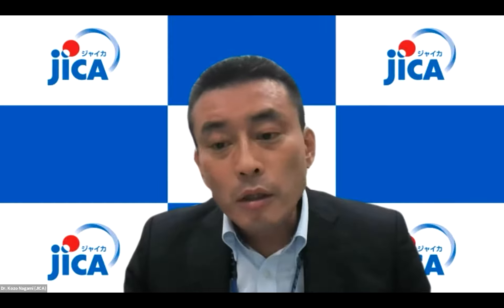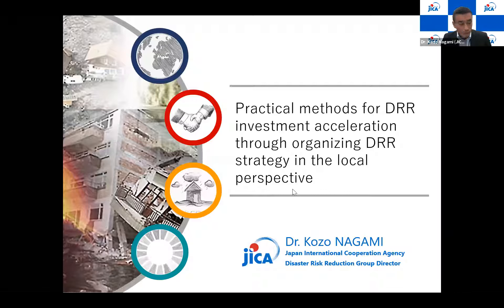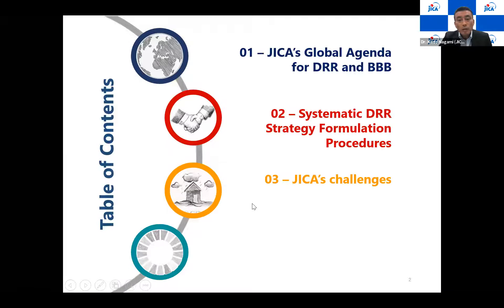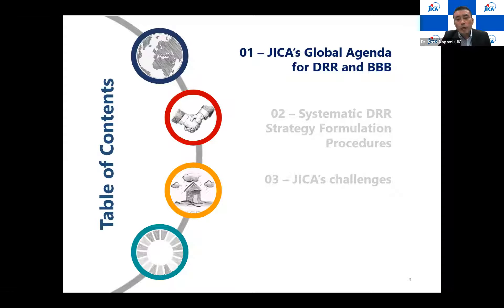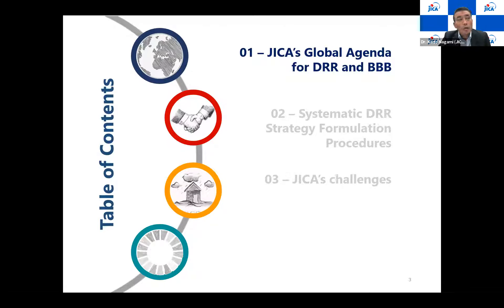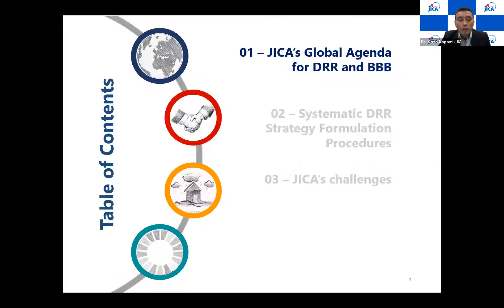My presentation has three sections. In the first one, I'd like to share how JICA is setting up our strategy for disaster risk reduction and build-back-better — we call it JICA's global agenda. We have 20 global agendas in JICA, with a multi-sector approach across departments and operations. DRR and BBB is one of those 20 agendas.